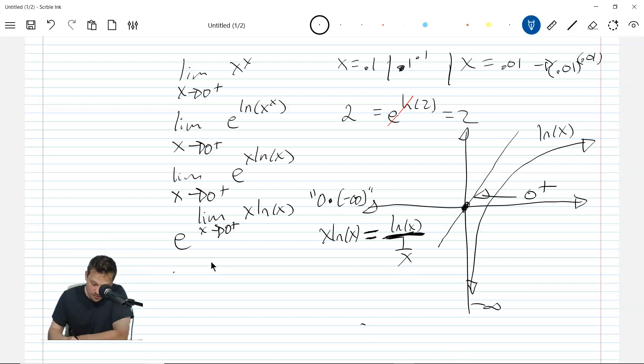So that means this is now going to become e to the limit as x approaches 0 from the right of ln of x over 1 over x. But now think about this carefully because this is ln of x that goes towards negative infinity, and 1 over x goes towards positive infinity. Here, you end up with this kind of competition: negative infinity over positive infinity instead of 0 times negative infinity. So for that reason, you can hit this with L'Hôpital.